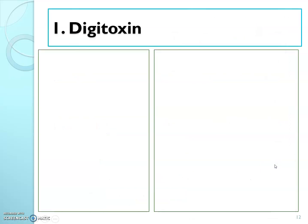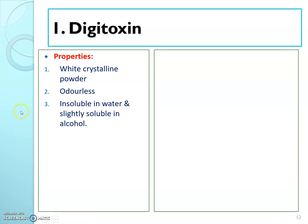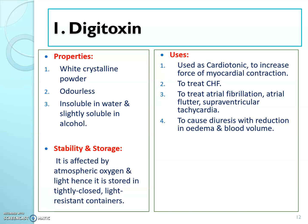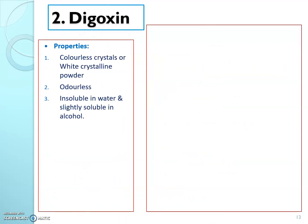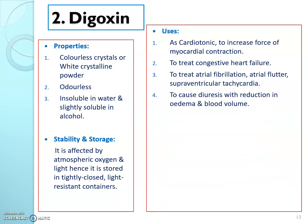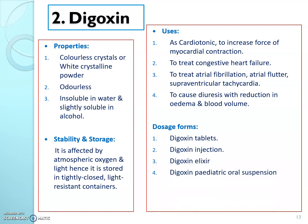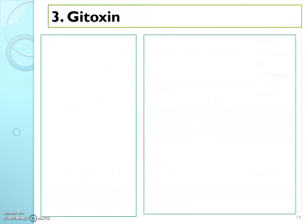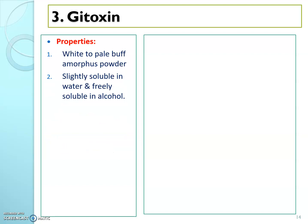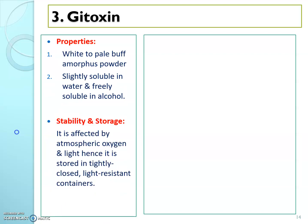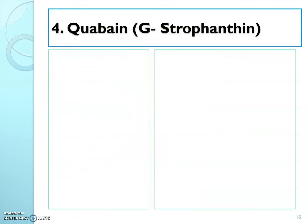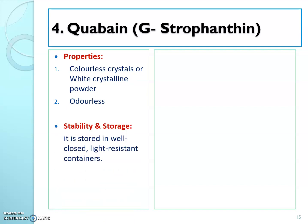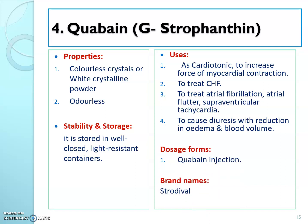Now see the details of each cardiac glycoside. For digoxin: properties, stability and storage conditions, uses, dosage forms, and brand names. For digitoxin: properties, stability and storage, uses, dosage forms, and brand names. For gitoxin: properties, stability and storage conditions, uses, official preparations, dosage forms, and brand names. For ouabain: properties, stability and storage conditions, uses, dosage forms, and brand names.